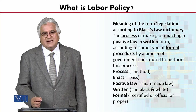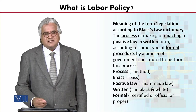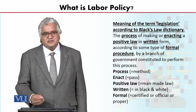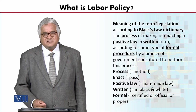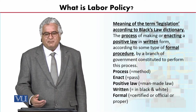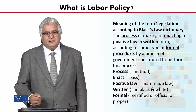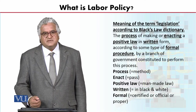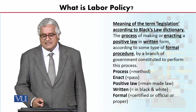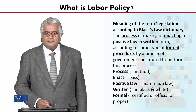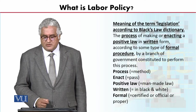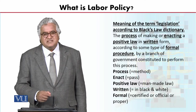तो वो यह कह रहे हैं कि यह ऐसा process है जिसमें man-made laws बनाए जाते हैं। Enactment का मतलब है laws made by Parliament, in written form. तो एक यह भी खूबी बताई है कि legislation जुबानी नहीं होती, यह लिख कर होती है और इसको codification भी कहते हैं। Codified law एक ऐसा law होता है जो systematically arranged law कहलाता है, जिसमें definition establish की जाती है, जिसमें preamble होता है, enabling provisions होती हैं, जिसमें schedules होते हैं। इसके लिए procedure constitution में लिखा होता है कि कैसे legislation होगी।